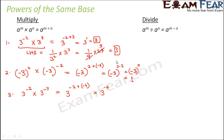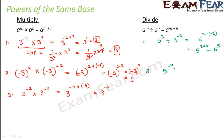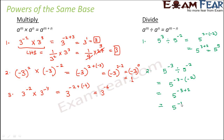Now let us look at division. For 5 to the power 3 divided by 5 to the power minus 2: this equals 5 to the power 3 minus minus 2, which is 5 to the power 3 plus 2, that is 5 to the power 5. Another example: 5 to the power minus 3 divided by 5 to the power minus 2 gives minus 3 minus minus 2, which is minus 3 plus 2, that is 5 to the power minus 1.